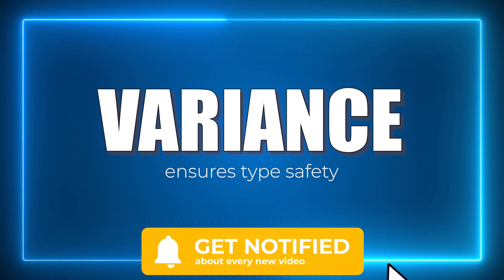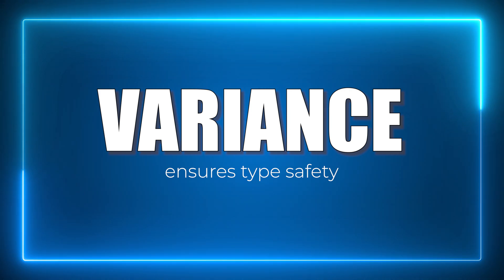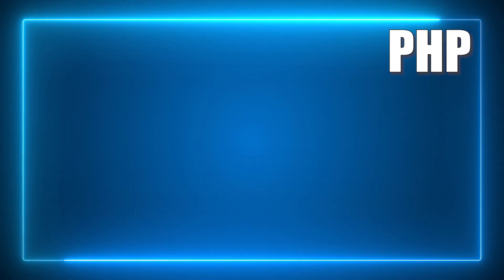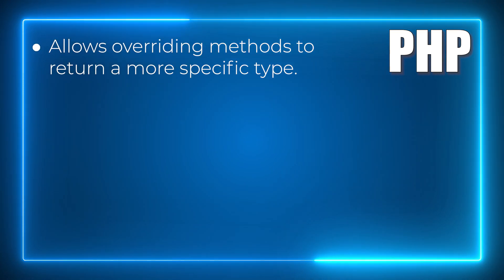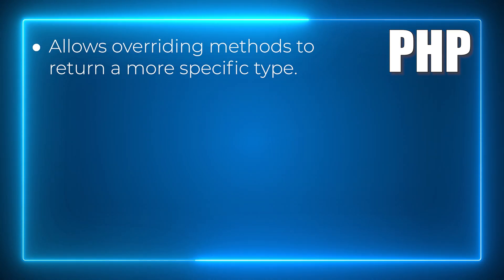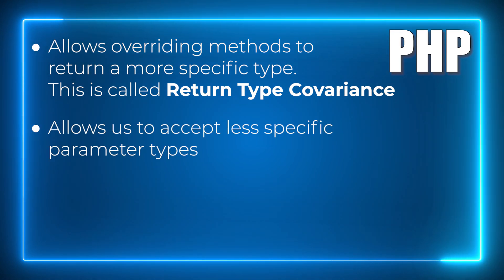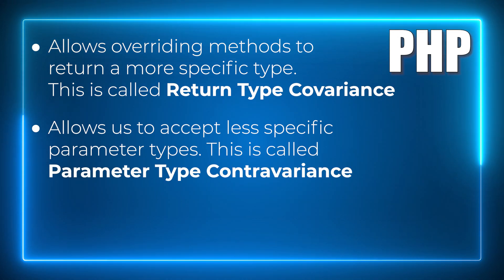Variance ensures type safety so that the compiler knows what to do when it encounters a child class that overrides a method with a different return or parameter type. It needs to know whether it's going from less specific to more specific, or vice versa. PHP lets us override methods to return a more specific type, which is called return type covariance, and it also lets us accept a more general or less specific parameter type, which is called parameter type contravariance.